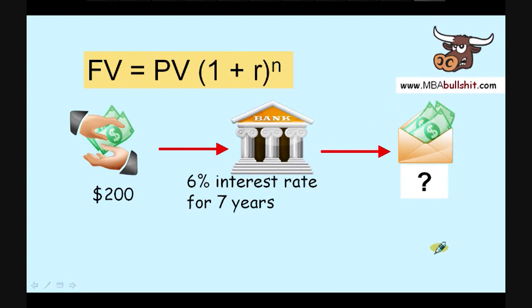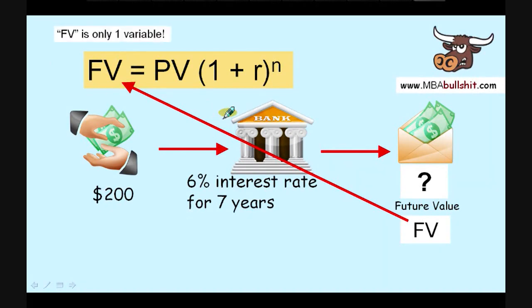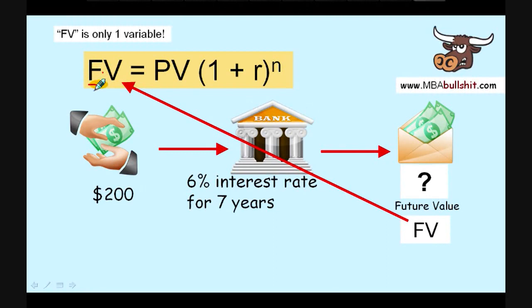First of all, going back here — this amount that we're looking for is called Future Value, written as FV. This FV is exactly the same as the FV in the formula. Something to remember: FV is only one variable. You might think FV means two variables, F and V, multiplied together, but in our case it is just one single variable.